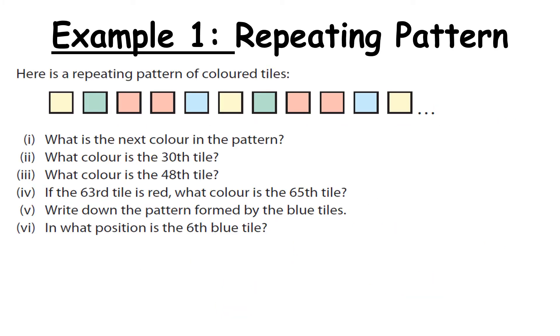Example one. Here's a repeating pattern of coloured tiles. So you can see we have a yellow, green, red, red, blue, yellow, green, red, red, blue, and so on. So we can see that it's repeating after each five colours.